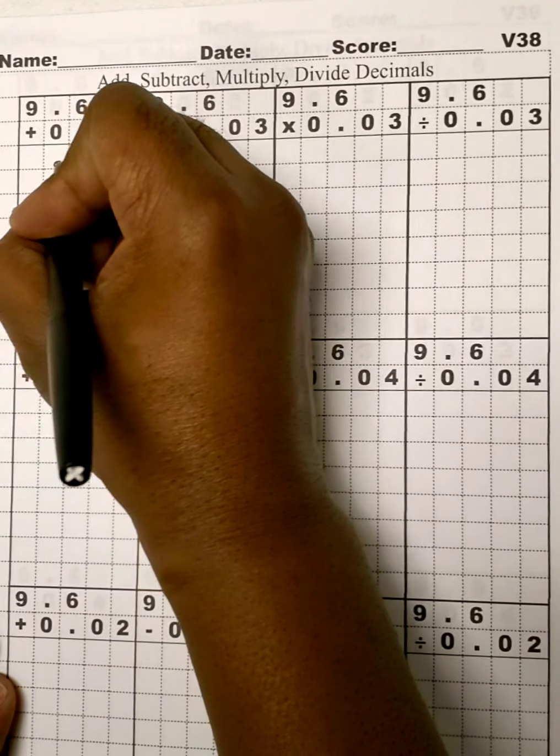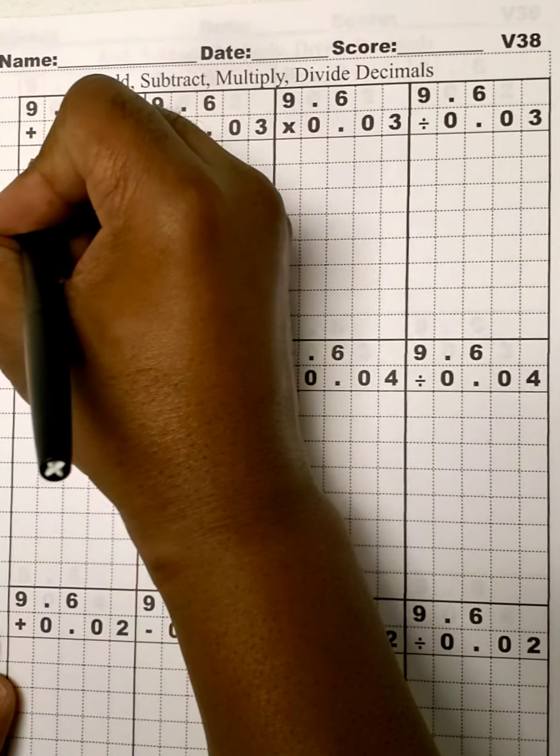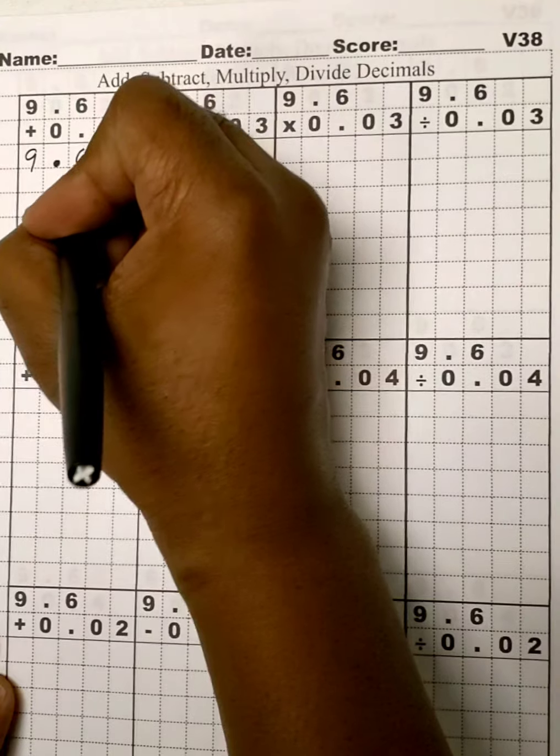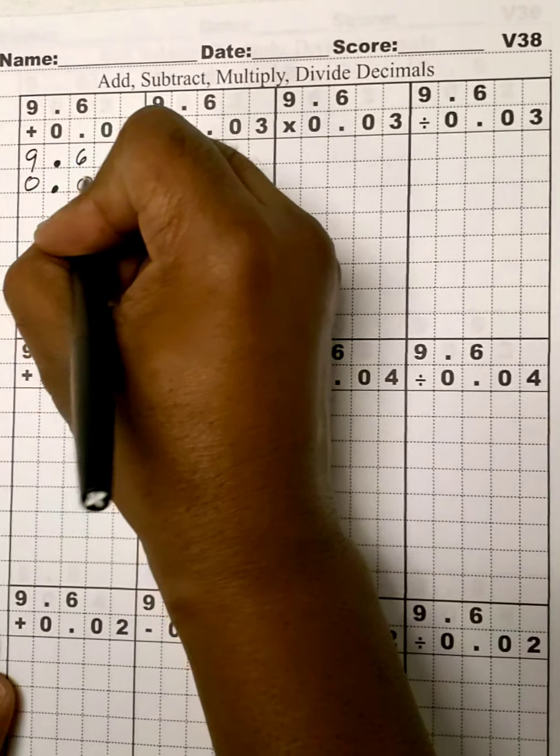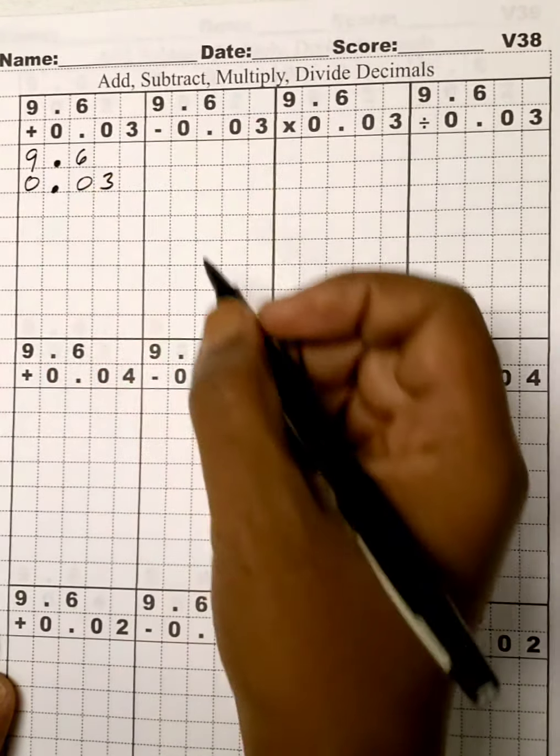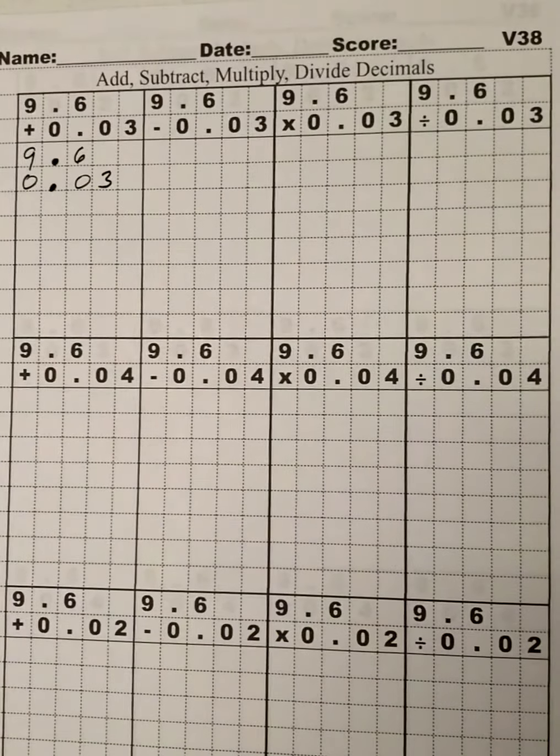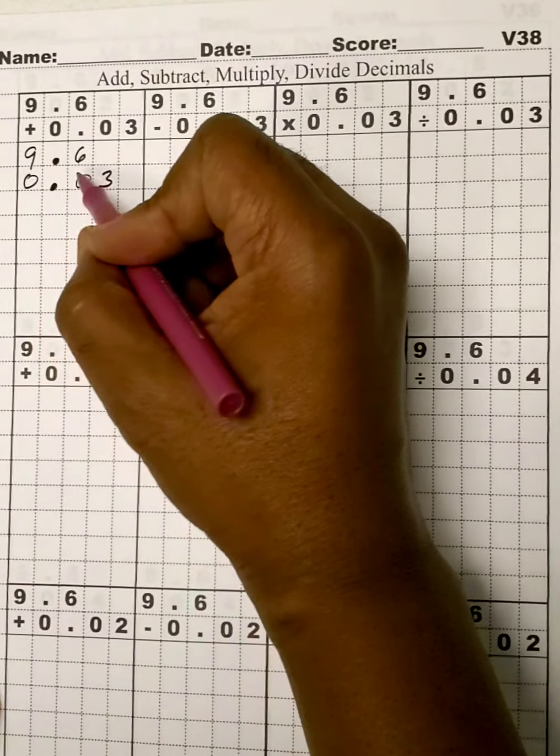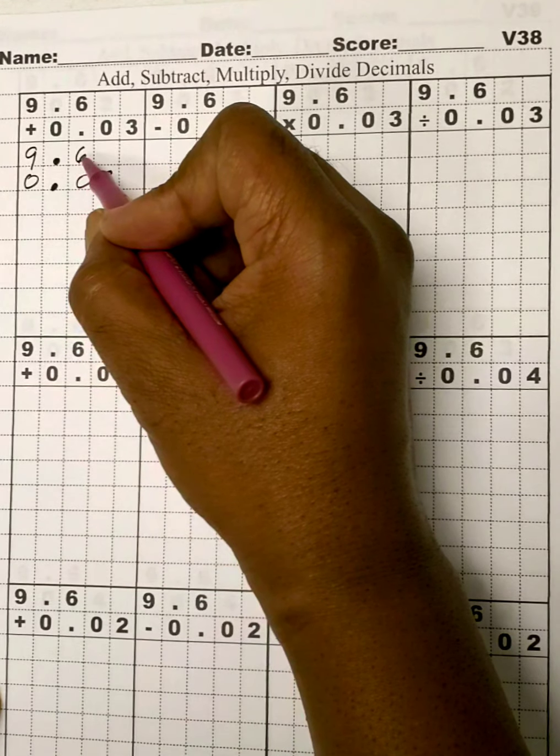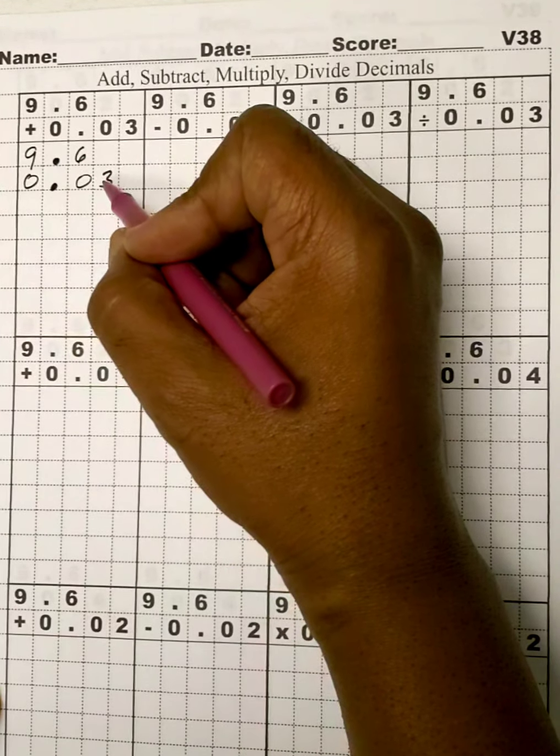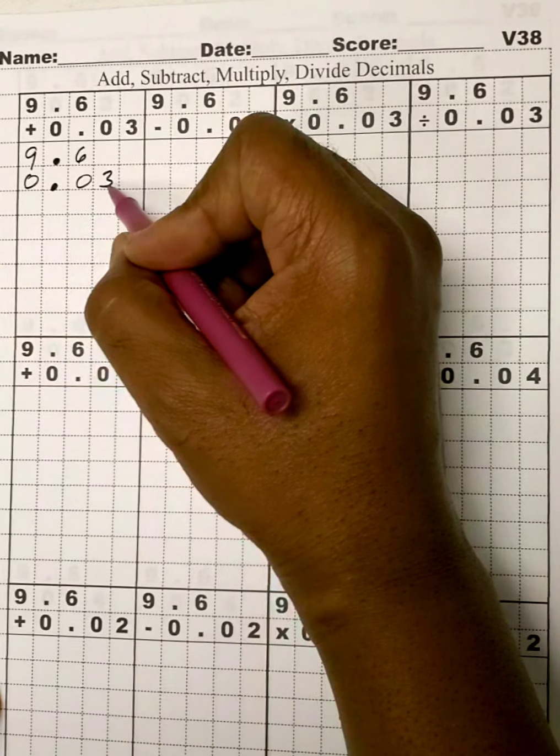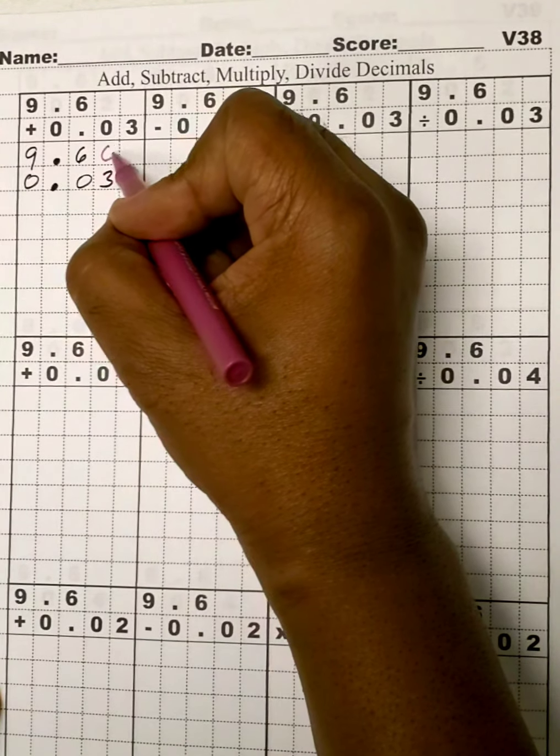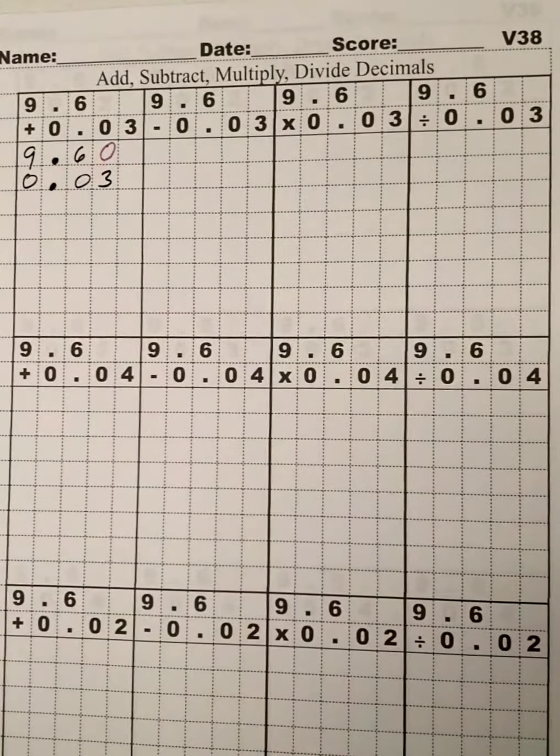So, we'll align our decimals. So, this will be 9 and 6 here. This will be 0, 0, and 3. And now we'll make sure all our places are filled. The ones, we have 9 and 0. The tens, we have 6 and 0. The tens, so hundreds, I say. We have 3, but no number here. So, we'll fill that in with a 0. And proceed to add.